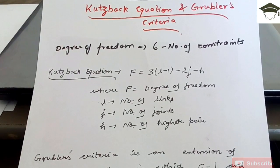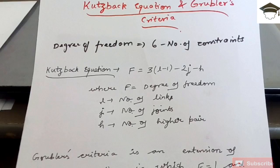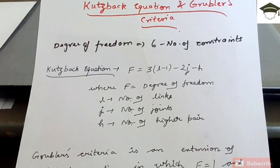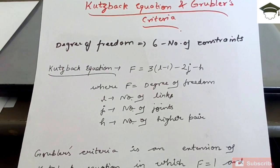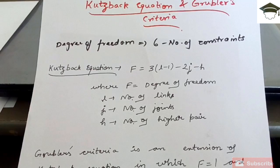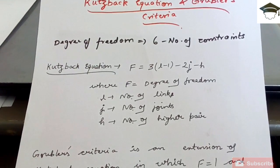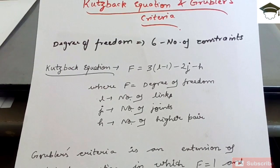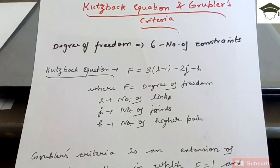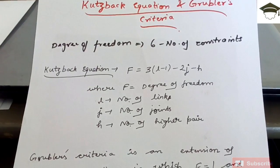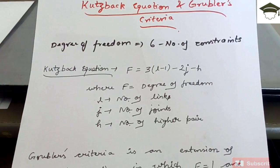Kurtzbach equation and Grubler's criteria. Now Kurtzbach was a scientist who gave a relation to find out the degree of freedom of a mechanism. Now first we have to understand what is the degree of freedom. So degree of freedom is the number of ways by which any link can move. There are six total, the maximum possible degree of freedom, that is three translation in the x, y, z direction and three rotation in the x, y, and z plane. So there are maximum six degrees of freedom.